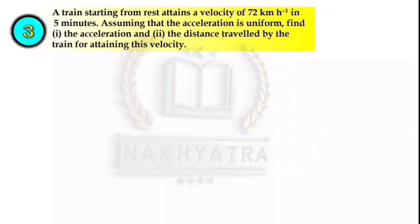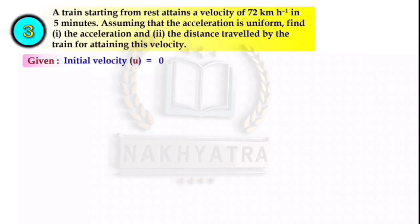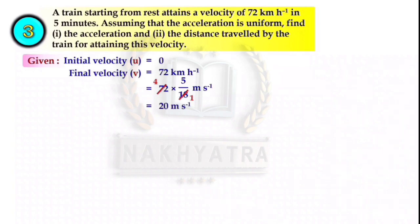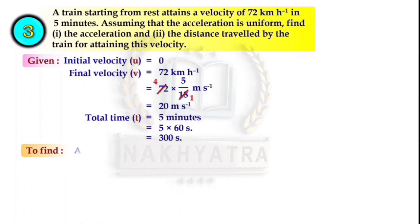Just formula-based questions. Question number 3: A train starting from rest attains a velocity of 72 kilometer per hour in 5 minutes. Assuming the acceleration is uniform, find the acceleration and the distance traveled by the train. Given: initial velocity U = 0 (train starts at rest). Final velocity V = 72 km/h — convert to meter per second — we get V = 20 m/s. Total time T = 5 minutes, converting to seconds gives T = 300 seconds. We have to find acceleration and distance S.